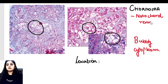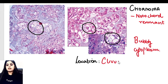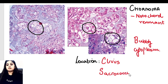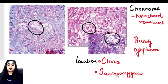Since the tumor arises from the notochord remnants, the site is going to be where those remnants are found. The location is either going to be the clivus or the sacrococcygeal region. These are the two places where the tumor will be found, with the sacrococcygeal region being a favorite with examiners.